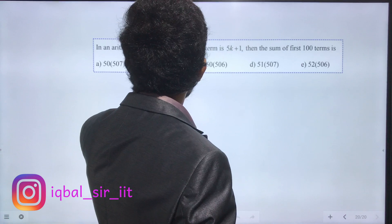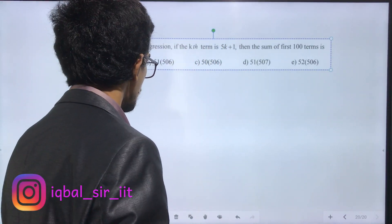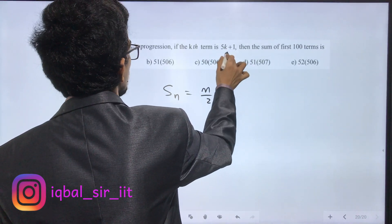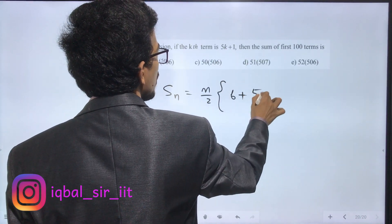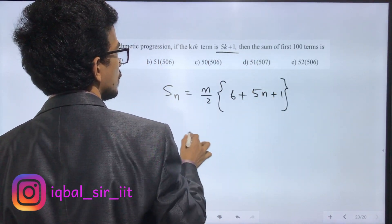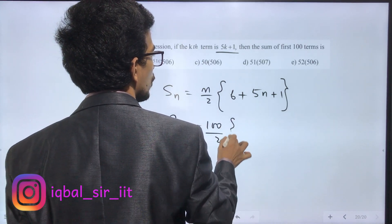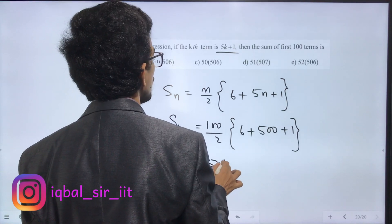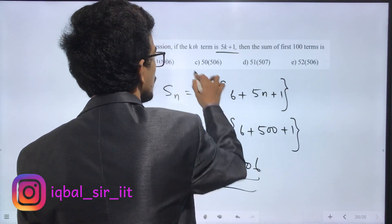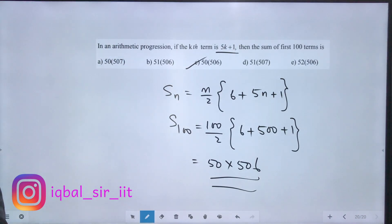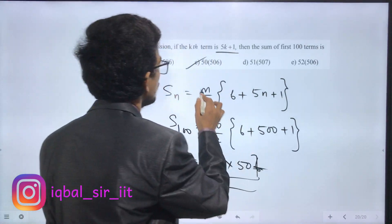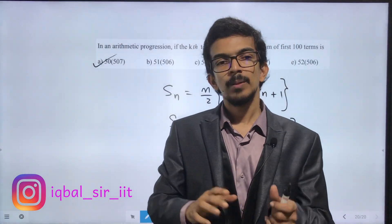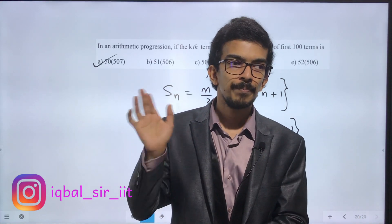Problem 120: In an arithmetic progression, if the kth term is 5k + 1, then the sum of first hundred terms is S_n = n/2 times (first term plus last term). The first term when k=1 is 6, and the last term is 5(100) + 1 = 501. So S_100 = 100/2 × (6 + 501) = 50 × 507. This is the answer, 50 times 507.